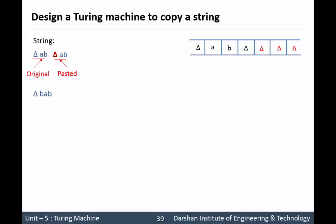If the string is 'bab' then the resultant string will be bab delta bab. This is the original string and this is the pasted string. Now let us consider this string onto the tape. Suppose we have 'ab' on the tape. As we know, the tape is an infinite sequence of cells. There can be infinite blank symbols on both ends of the tape. Now let us discuss the logic to copy the string.